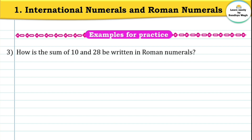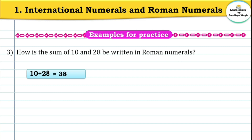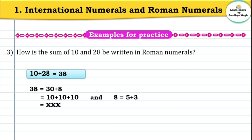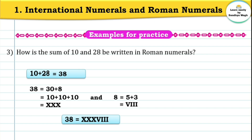How is the sum of 10 and 28 written in Roman numerals? 10 plus 28 equals 38. Now write 38 in Roman numerals: 38 equals 30 plus 8. 30 means 10 plus 10 plus 10, so we write XXX. 8 means 5 plus 3, so V (5) followed by I, I, I (3 times), giving VIII. Therefore 38 is written as XXXVIII in Roman numerals.